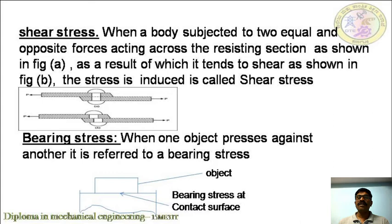Strain: whenever a body is loaded, its dimensions change. When one end is fixed and another end is loaded, the length increases. Strain is defined as change in length divided by original length. Types of strains: linear strain, lateral strain, volumetric strain, and shear strain. Linear strain: the strain that takes place along the axis or along the applied load is called linear strain; it includes tensile strain and compressive strain. Lateral strain: the strain taking place perpendicular to the applied load is called lateral strain.